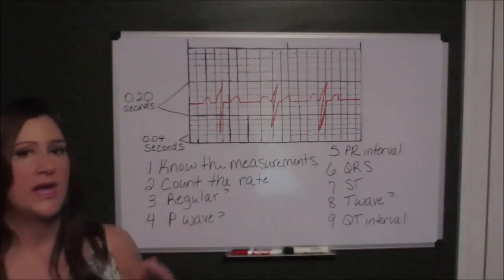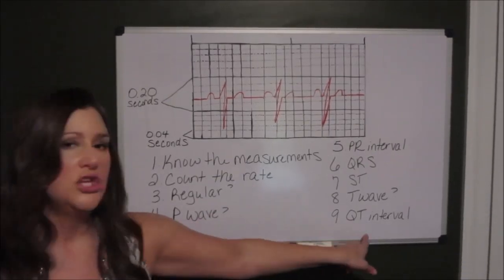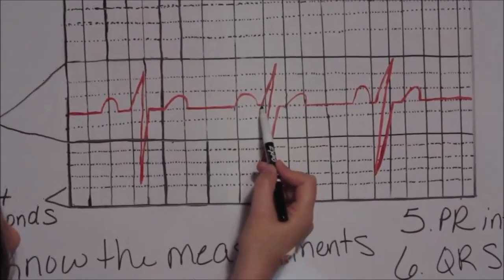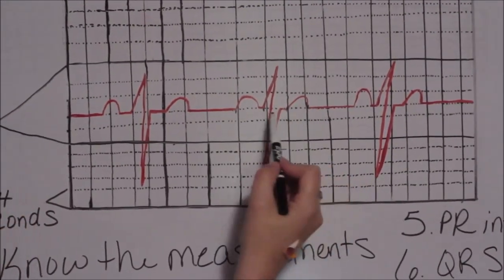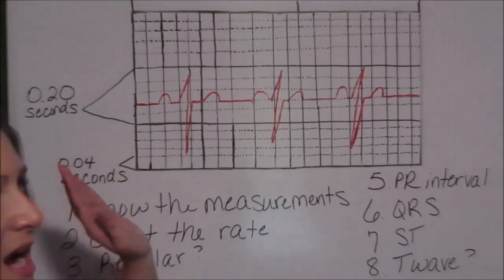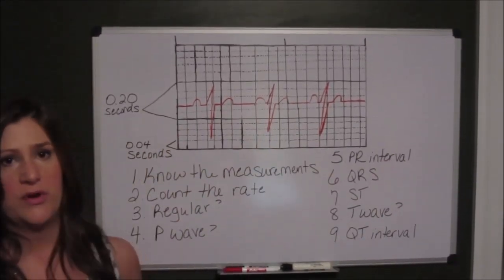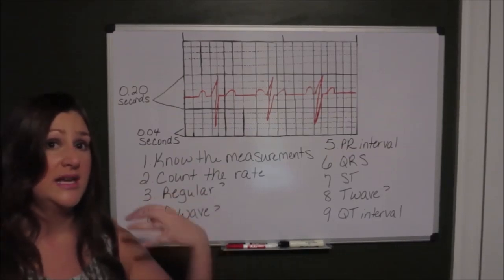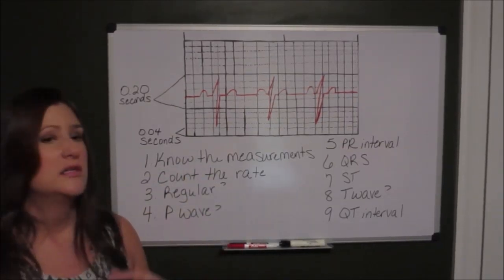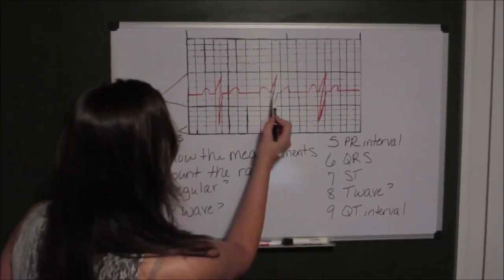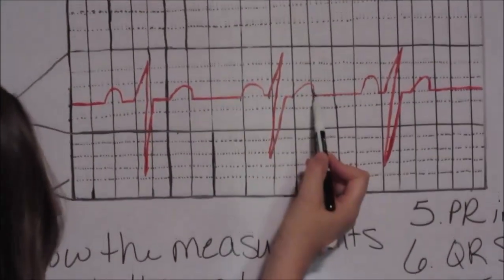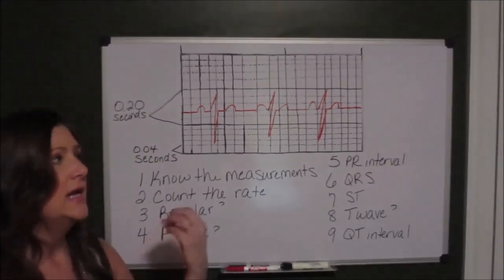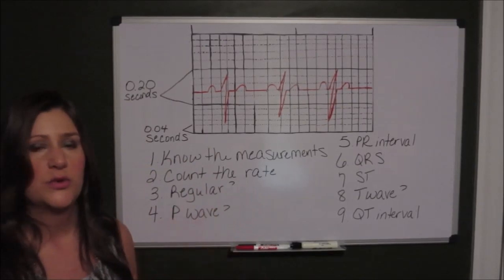The last thing you're going to measure, and a lot of times this isn't taught in school, but it's important, is the QT interval. So the QT interval is measured starting right here where your Q wave starts to leave the isoelectric line all the way to here where your T wave returns. This represents the entire time that it takes the ventricles to depolarize and repolarize. So a prolonged QT interval can leave your patient open to lots of deadly dysrhythmias. So we want that QT interval to not be any longer than 0.50 seconds, because a prolonged QT can open your patient up for V-fib and other dysrhythmias that we don't want.